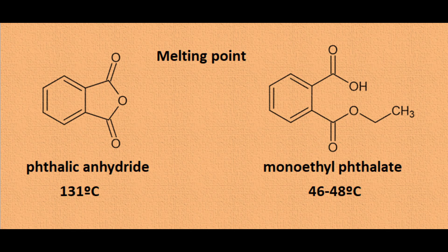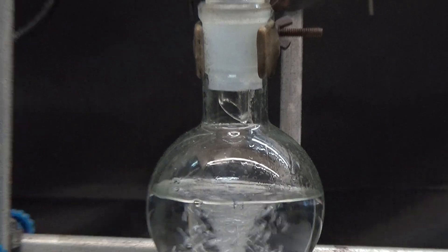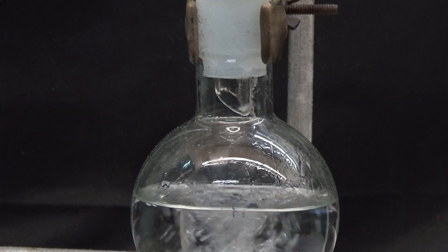Looking for physical properties of monoethyl phthalate, I found that its melting point is 46-48 degrees and of phthalic anhydride 131 degrees, assuming that this solid is monoethyl phthalate or phthalic anhydride, indicating that the esterification was not complete.